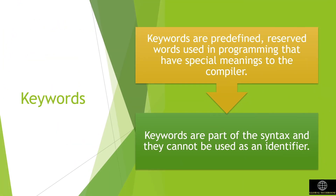Keywords are reserved words that have special meaning in C language. The meaning of C language keywords has already been described to the C compiler. This meaning cannot be changed. Thus, keywords cannot be used as variable names because that would try to change the existing meaning of a keyword, which is not allowed.